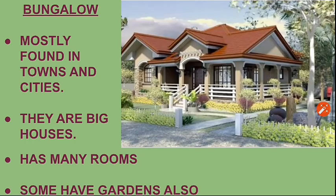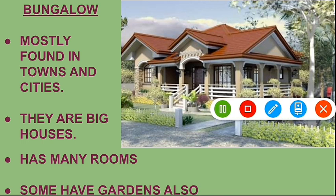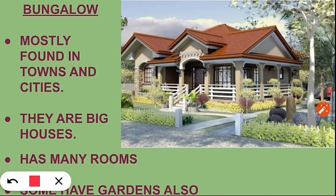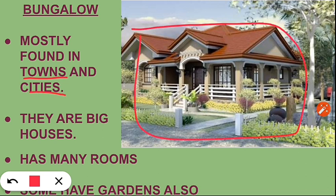The next type of house is a bungalow. Bungalows are mostly found in big cities and towns. They are big houses and have many rooms. Bungalows also have gardens.